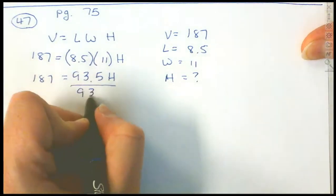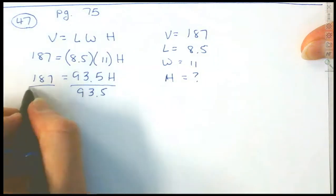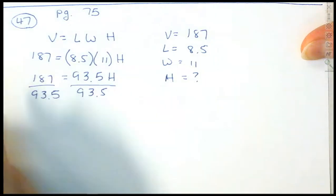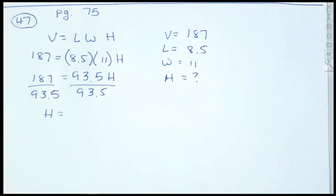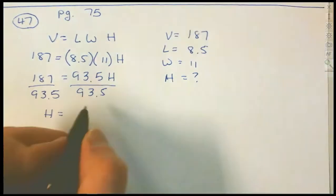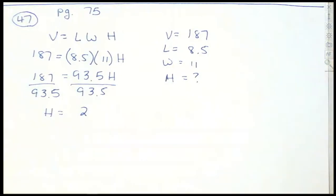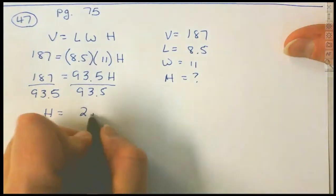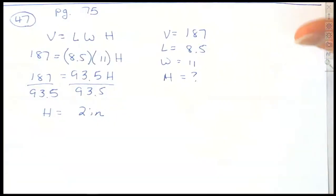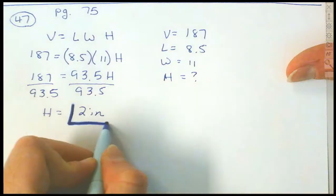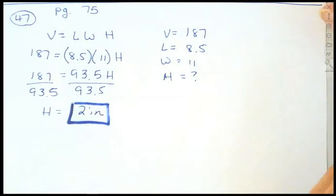Divide by 93.5, and that gives us H = 2. What's it measured in? It's not cubic inches. Why not? This is a height. The height of this ream would be in inches — so that's 2 inches. Not cubic inches, because we're finding the height, not the volume.